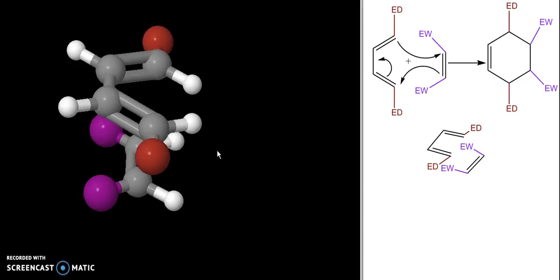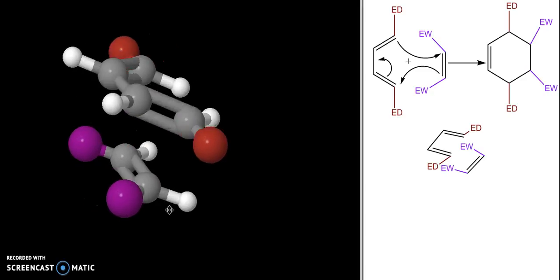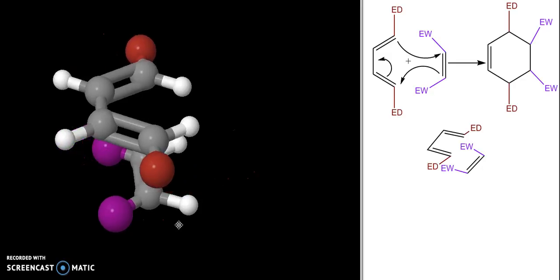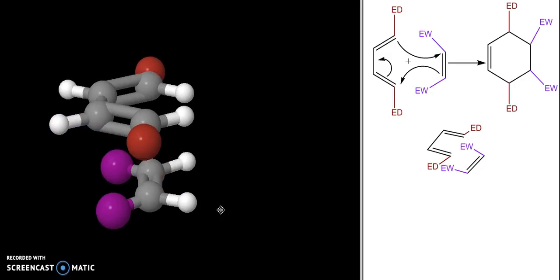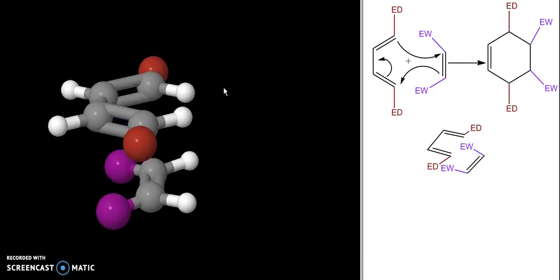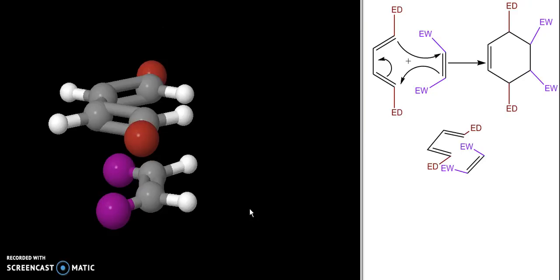The dienophile is down at the bottom. The purple spheres are my electron withdrawing groups. What you can see if I rotate this is that the electron withdrawing groups are extended underneath the double bonds of my diene. This is the endo approach. We can understand why the endo approach is preferred if we look at the orbitals on these molecules.